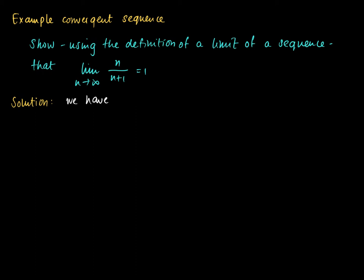We have to show that for each epsilon larger than zero, so epsilon is an arbitrary number larger than zero but fixed, we can construct or find an index capital N epsilon...